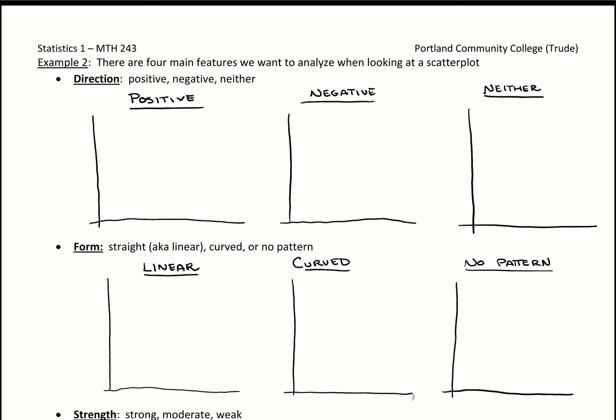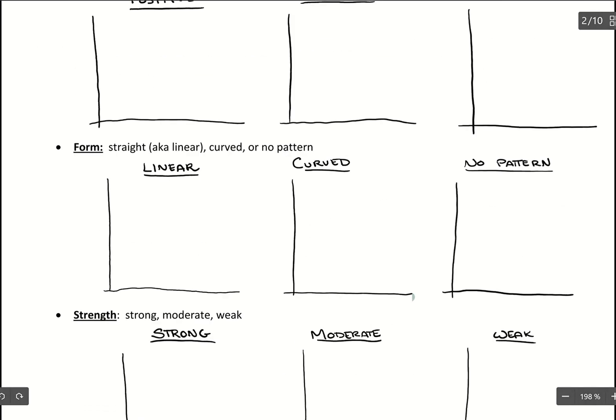Really the two important pieces that we'll want to describe are going to be direction and strength, but these other cases are going to bring through ideas that we want to be careful of, like when we get to describing form.